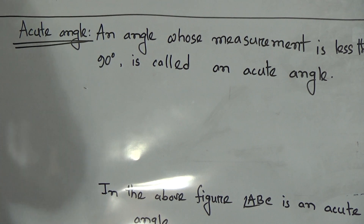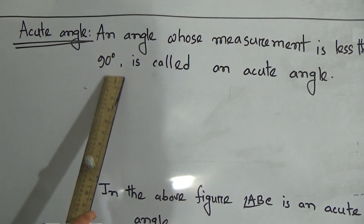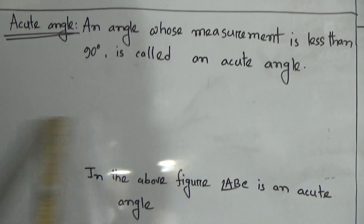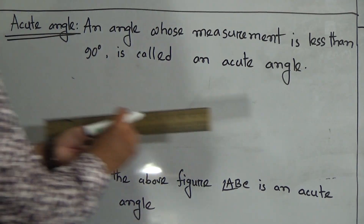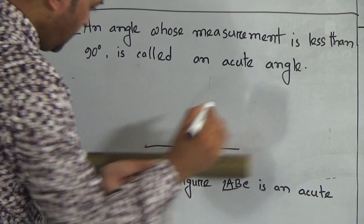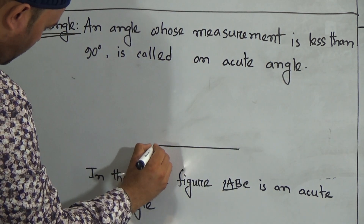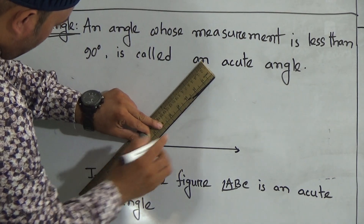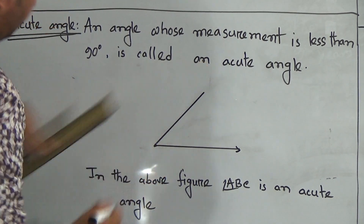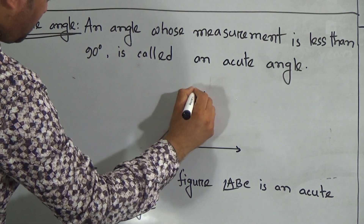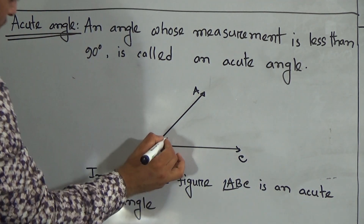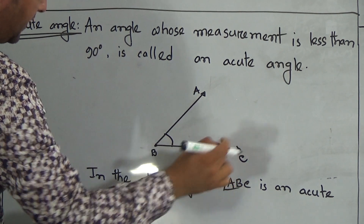Now go to the next one, which is acute angle. An angle whose measurement is less than 90 degrees is called an acute angle. So first of all, similarly, you have to draw a ray. Draw a ray this way. Here is a starting point and here is the ray. Then draw another ray on this point, and call this point A, this point B, and this point C. So here ABC is an acute angle.